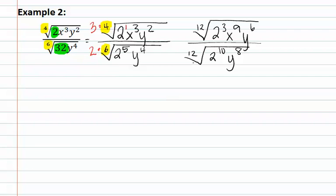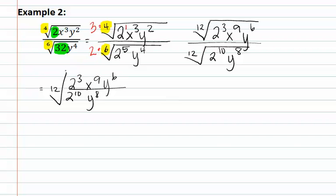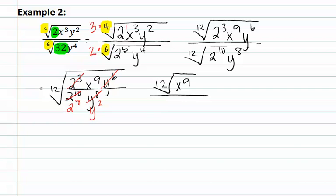Now that the indexes are the same, we can combine them into one large radical. Now that they are inside one large radical, we can reduce. We have 2 to the 3rd over 2 to the 10th, which reducing gives us 2 to the 7th in the denominator. We only have x's in the numerator, therefore they will not reduce at all. The y's reduce and give us y to the 2nd in the denominator. Since there is still a denominator in this problem, we must split them back apart: the 12th root of x to the 9th, over the 12th root of 2 to the 7th, y to the 2nd.